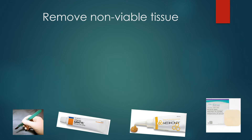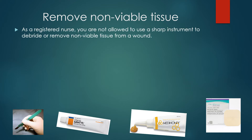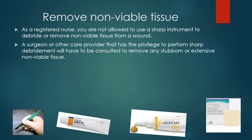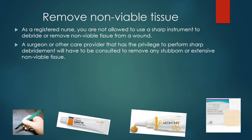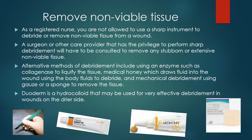You want to remove any non-viable tissue. As a registered nurse, you are not allowed to use a sharp instrument to debride or remove non-viable tissue from a wound. A surgeon or other care provider with the privilege to perform sharp debridement will have to be consulted to remove any stubborn or extensive non-viable tissue. Alternative methods of debridement include using an enzyme such as collagenase to liquefy the tissue, medical honey which draws fluid into the wound using the body's fluids to debride, and mechanical debridement using gauze or a sponge to remove the dead tissue. Duoderm is a hydrocolloid that may be used for very effective debridement in wounds that are on the drier side.